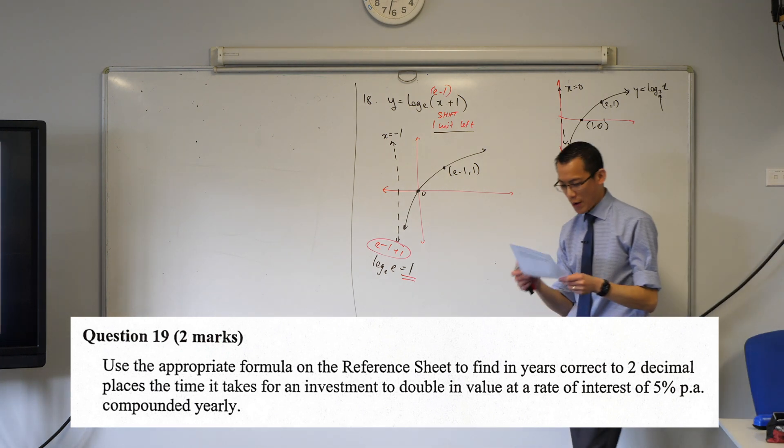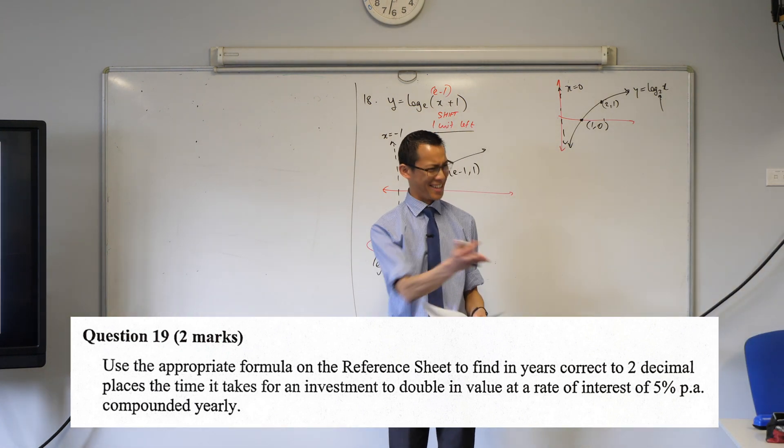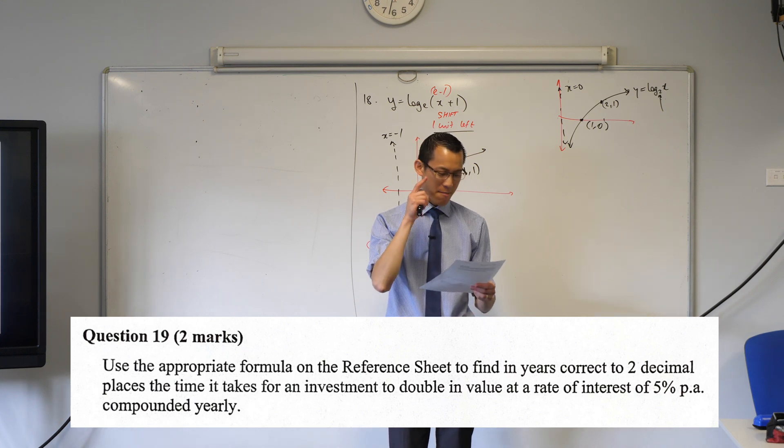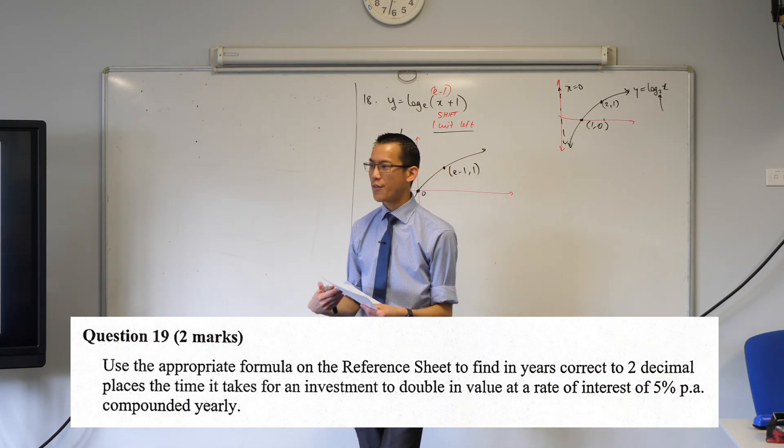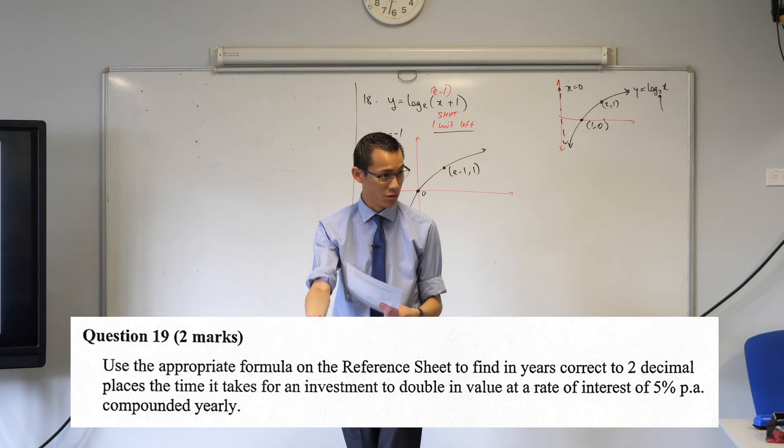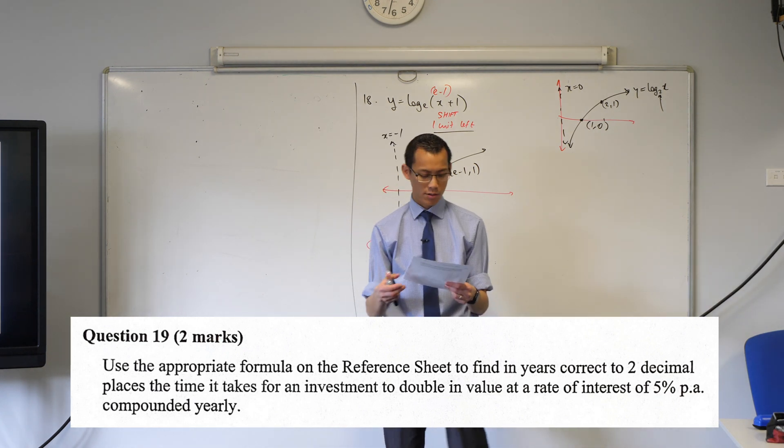Use the appropriate formula on the reference sheet. They're telling you to use the reference sheet to find, and then they tell you all this stuff. Now have a look at all the information. This is the clue that tells you which part of the reference sheet is useful to you.